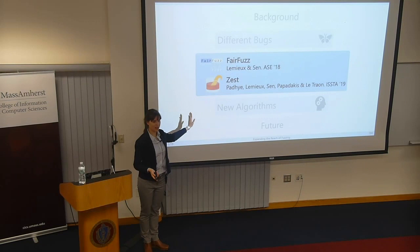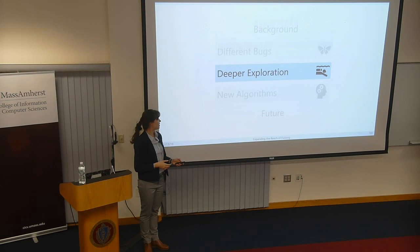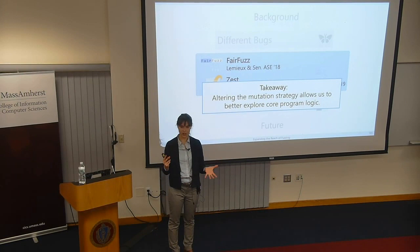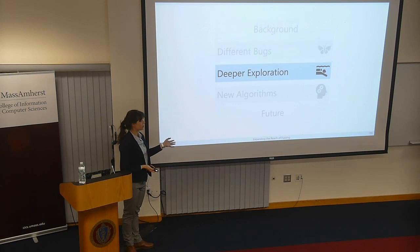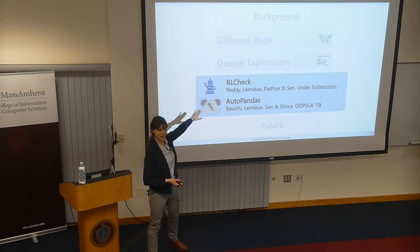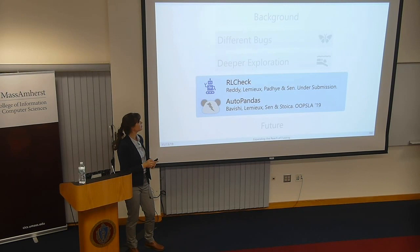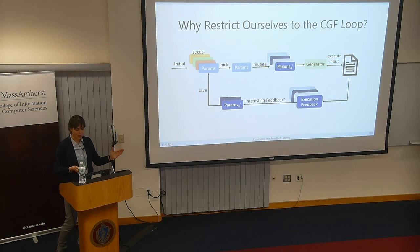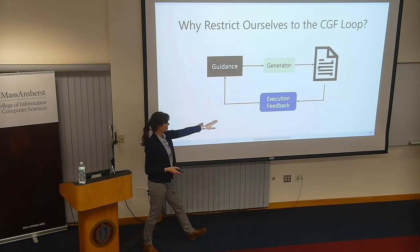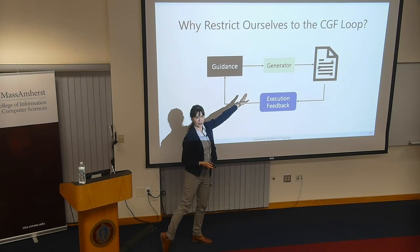The big takeaway of those works is that if you smartly control the mutation strategy in the loop, you can get much deeper into exploring the program. But along the way I got really interested in this generator abstraction — the idea of a thing that generates random data but we can make it not quite random shows up in a lot of other problems. We can think about what other things we can do by processing that execution feedback and using it to guide the generator beyond just bit mutations.